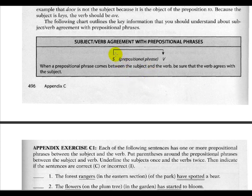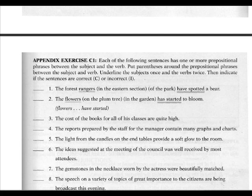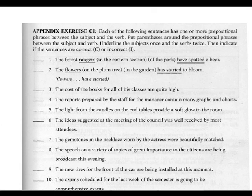Here's a small chart on subject-verb agreement with prepositional phrases. It shows the subject, the prepositional phrase, and the verb. The key rule is: when a prepositional phrase comes between the subject and the verb, be sure that the verb agrees with the subject. Now, to give us some practice, we're going to go through some exercises.